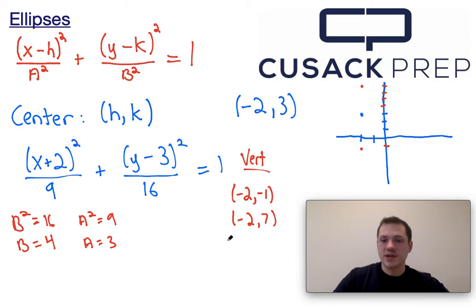Some teachers call these points vertices. I think most are going to call them co-vertices. And that's because they're along the minor axis. So if I go left 3 units from the center, which is the point negative 2, 3,